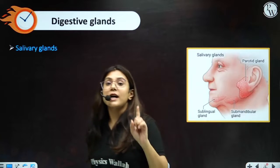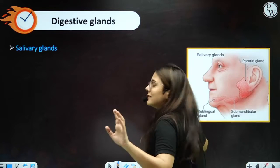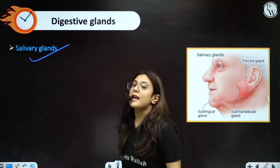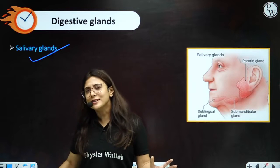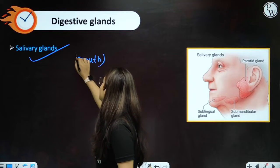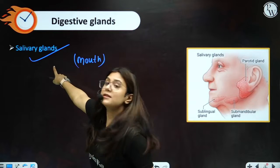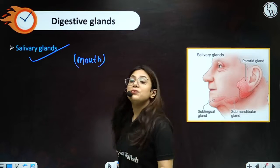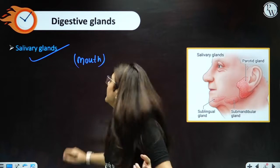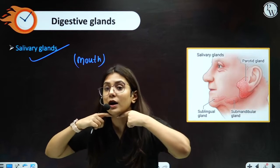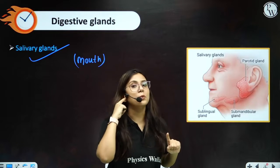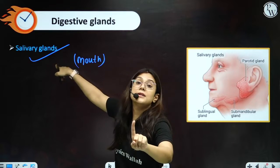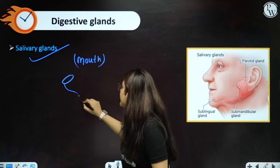Next, digestive glands — these are glands responsible for digestion. First, we are doing salivary glands. Salivary glands also help in digestion. These are found in the mouth, or the buccal cavity. There are different types of salivary glands: one is located below the tongue, one below the lower jaw, and one just below the temporal area. Salivary gland is an exocrine gland because it will add its secretions inside a duct, a tube-like structure.